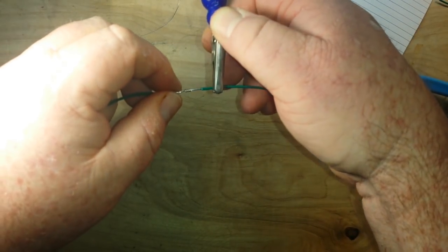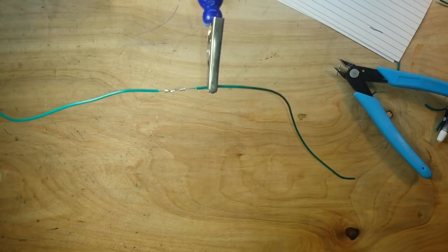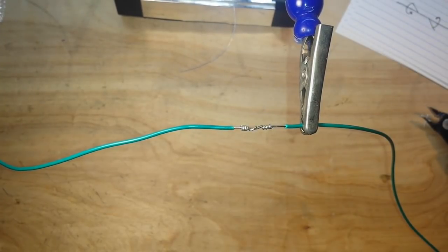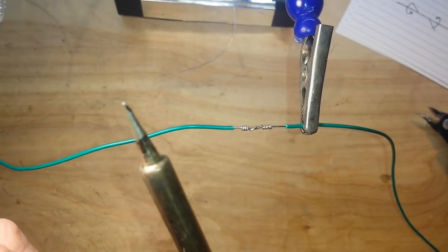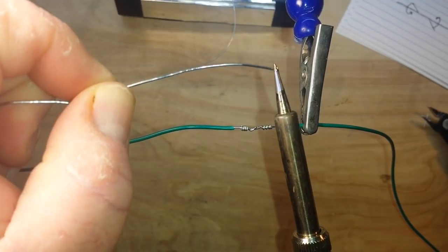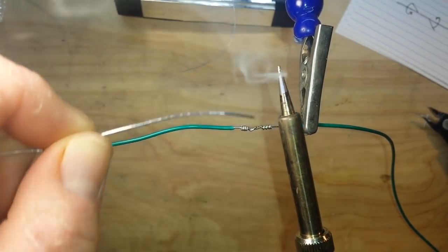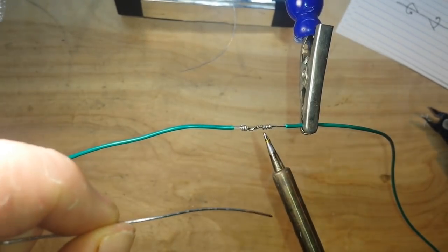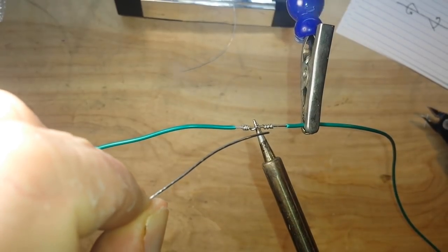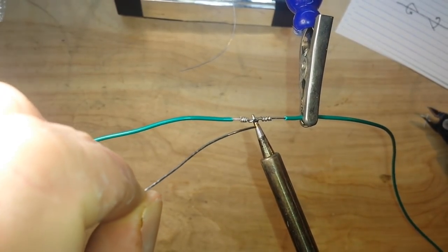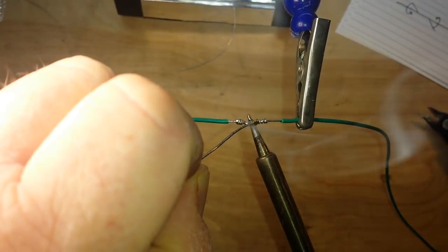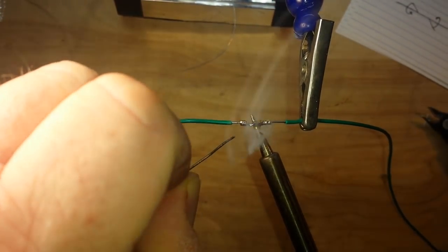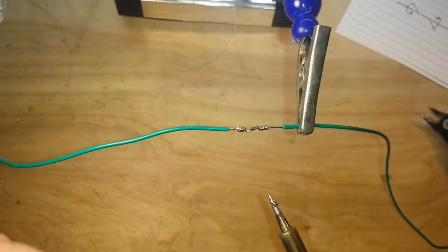The next step is to solder it. So I've got my 60/40 leaded solder, a clean iron. You're just going to touch the solder to the iron, just put a little dot of it on there to help with thermal transfer. Touch the iron to the wire, touch the solder to the other side of the wire, and let the capillary action pull it in.